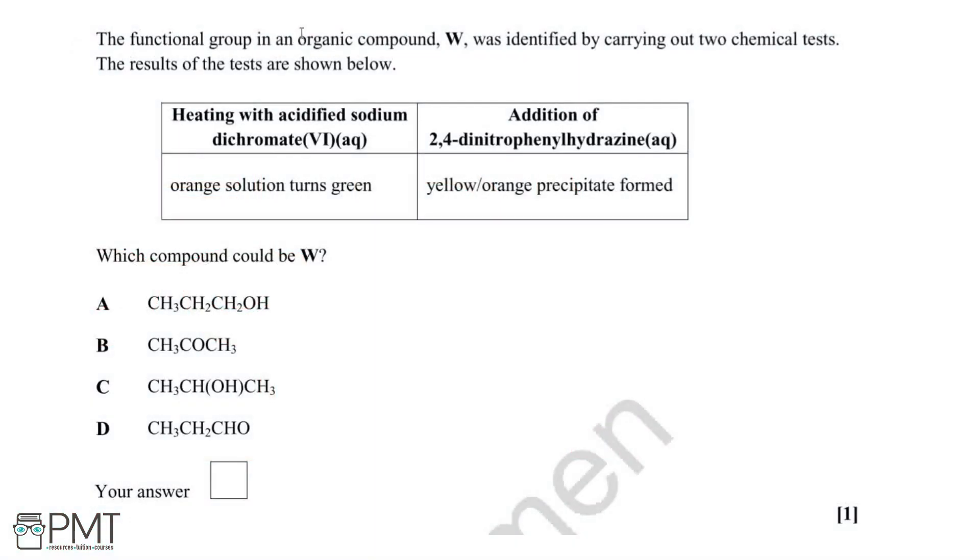For this question we need to identify what organic compound we have based on two chemical tests. From our list of options we can see that W could either be an alcohol shown in A and C, a ketone as shown in B, or an aldehyde that's option D. Let's have a look at the two chemical tests we've got.